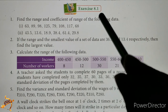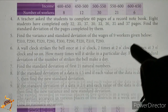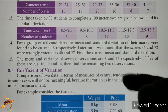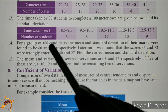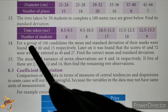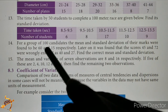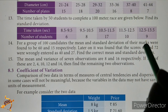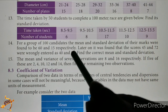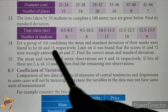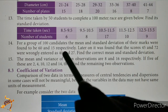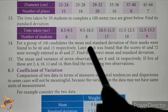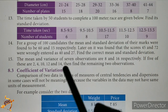In this video, we cover the 10th standard Math Exercise 8.1, the 14th sum. This is an example sum — sum 8.14. For a group of 100 candidates, the mean and standard deviation of their marks were found to be 60 and 15 respectively. Mean value is 60, standard deviation value is 15.